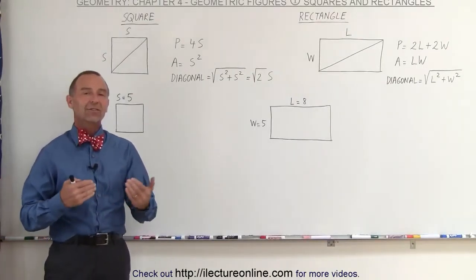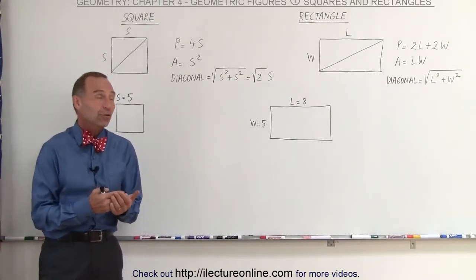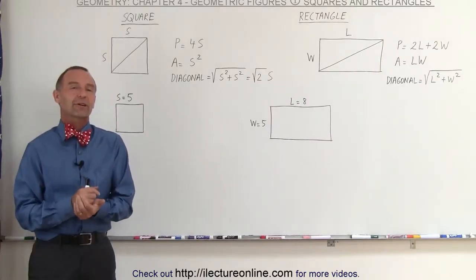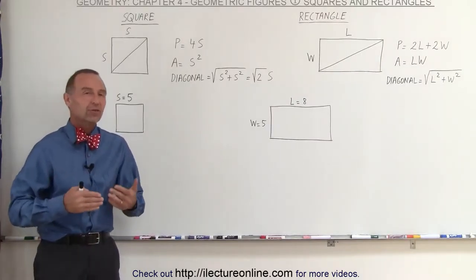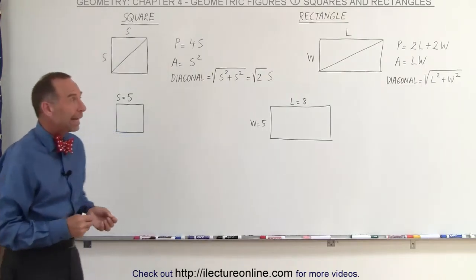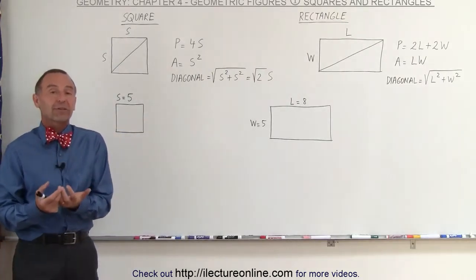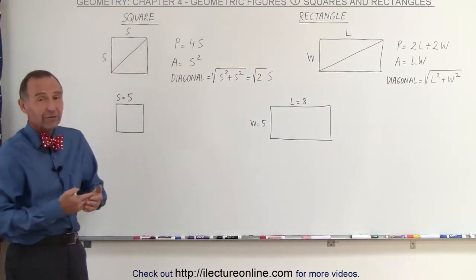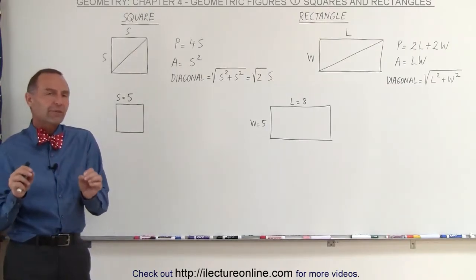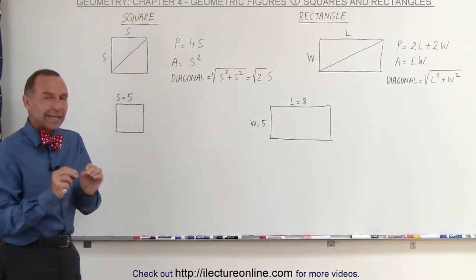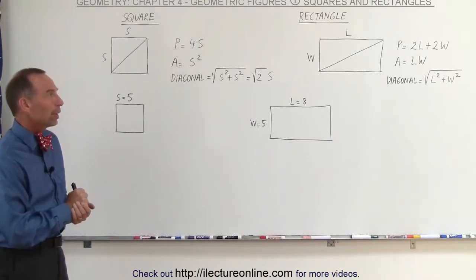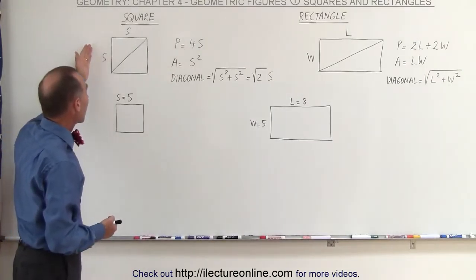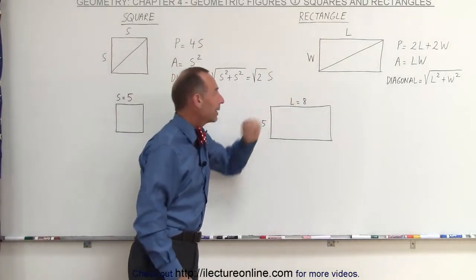Welcome to ElectronLine. In this next set of videos, starting with this one, we're going to be looking at various geometric figures — squares, rectangles, triangles, circles, and so forth — and we're going to talk about the specifics: how to find the area, how to find the perimeter, and in this case also how to find the diagonal and so forth, whatever is specific to each figure. Starting with the more common figures, we have a square and a rectangle.